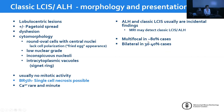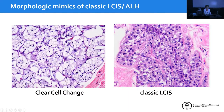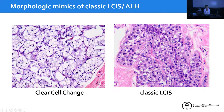Classic lobular neoplasia is multifocal in about 80% of cases, bilateral in about 30 to 40%. Morphologic mimics include clear cell change, where the clearing is within the cytoplasm of cells and you can still see cell borders. In contrast, the clearing in classic LCIS is secondary to spaces formed between cells as they retract from one another. Clear cell DCIS also has intracytoplasmic clearing, secondary to glycogen accumulation, and the nuclear atypia is generally higher.